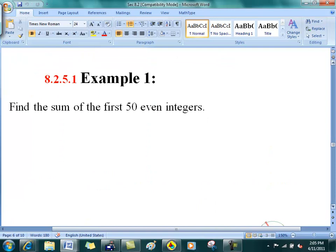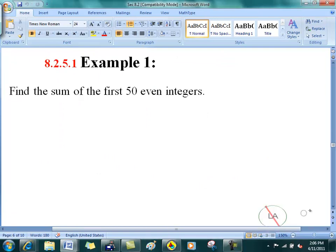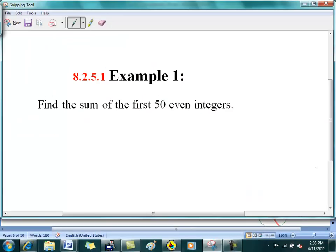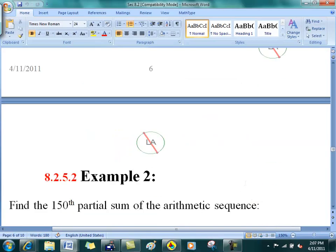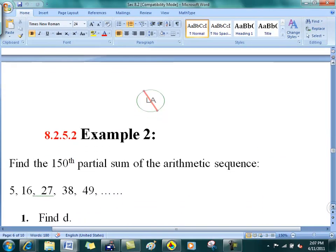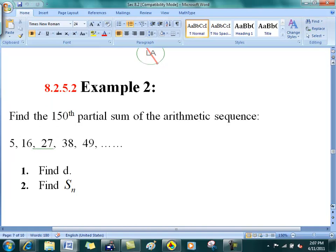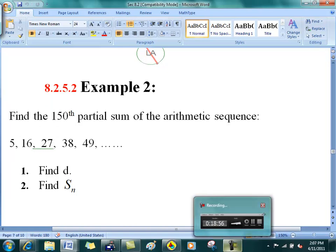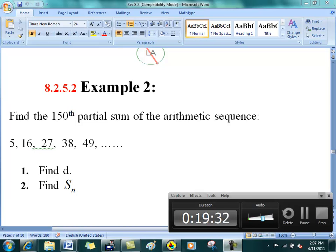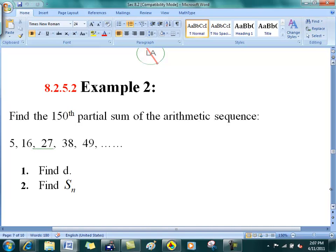All right, so use Gauss' formula to do this problem. All right, let's do another example then. And on this one here, I suggest you use the second formula. Partial sum just is another way of saying give me the sum of 150 terms. Because the sequence, the series goes on forever and ever. So all I want is the sum of the first 150.